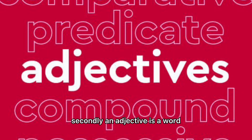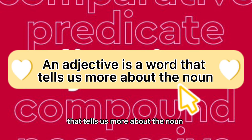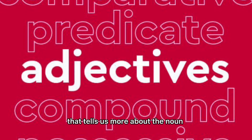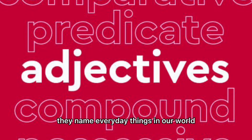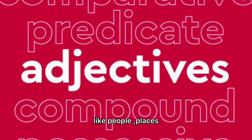Secondly, an adjective is a word that tells us more about the noun. As a recap, a noun is a naming word. They name everyday things in our world like people, places, objects, and animals.